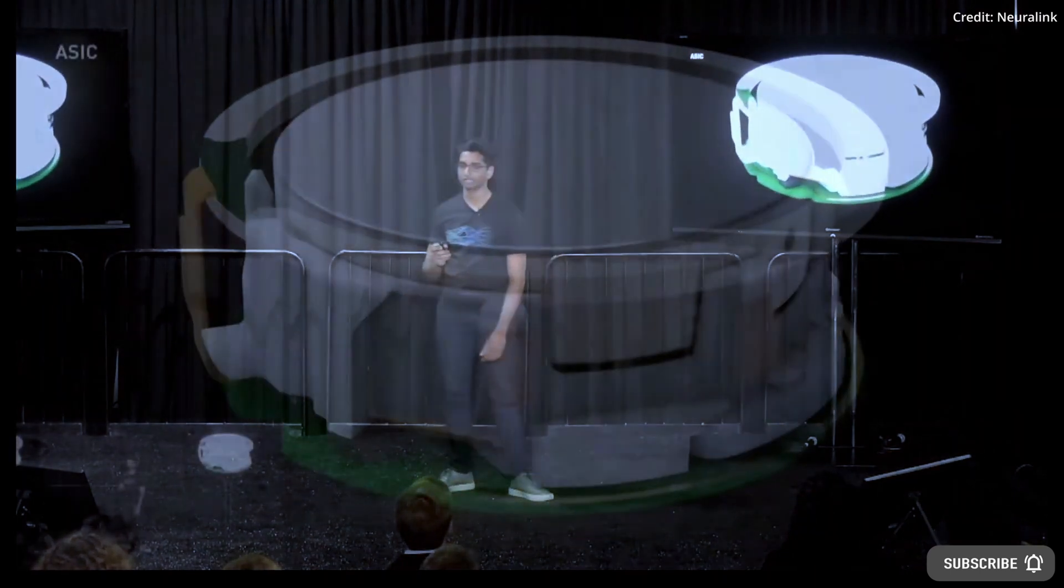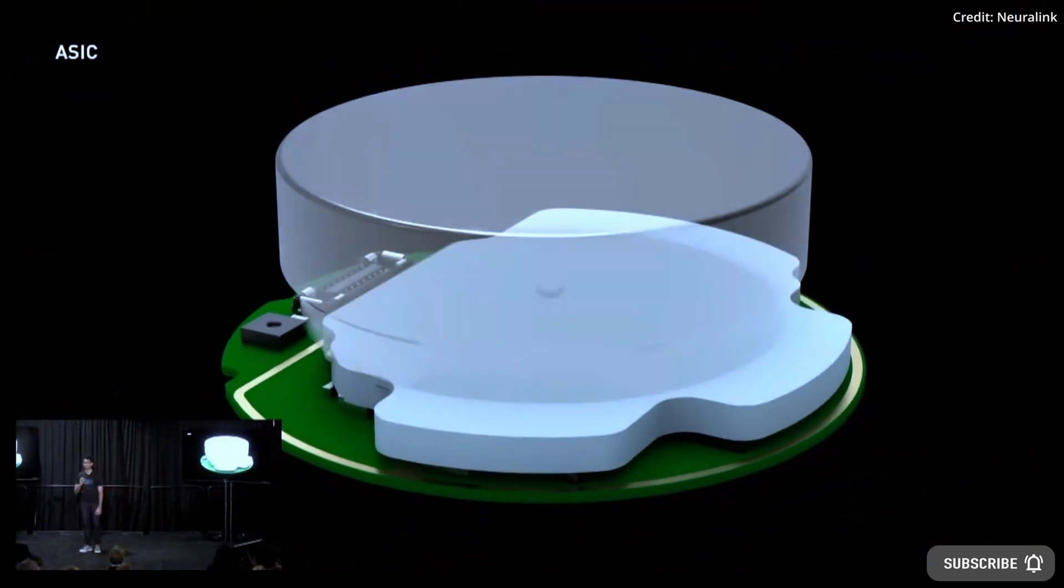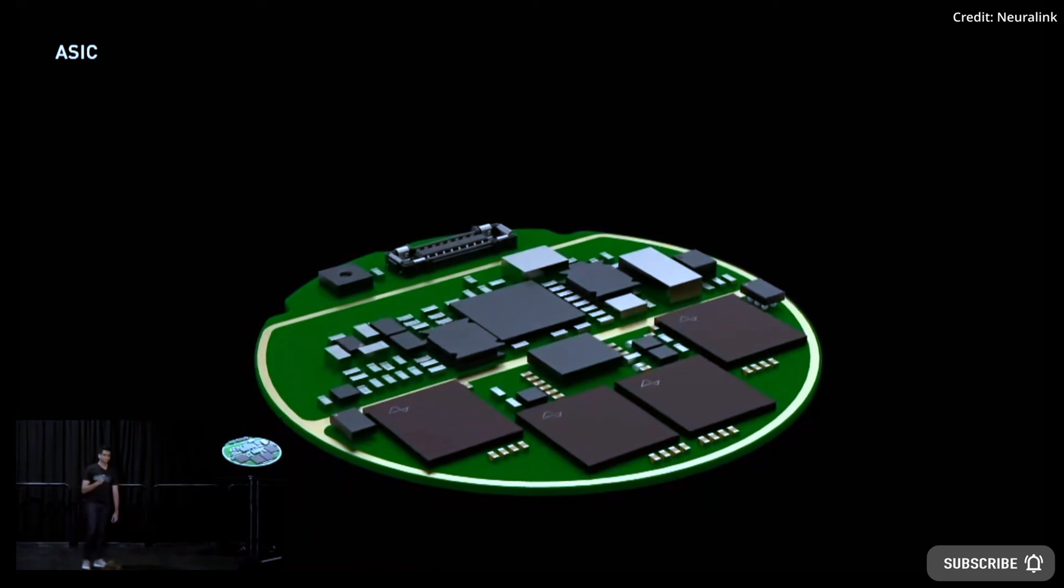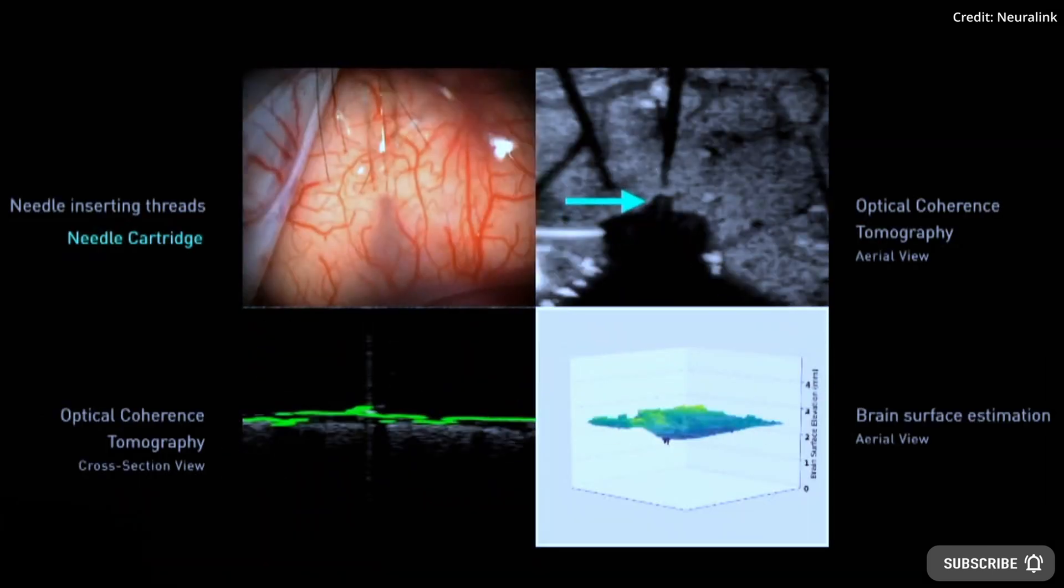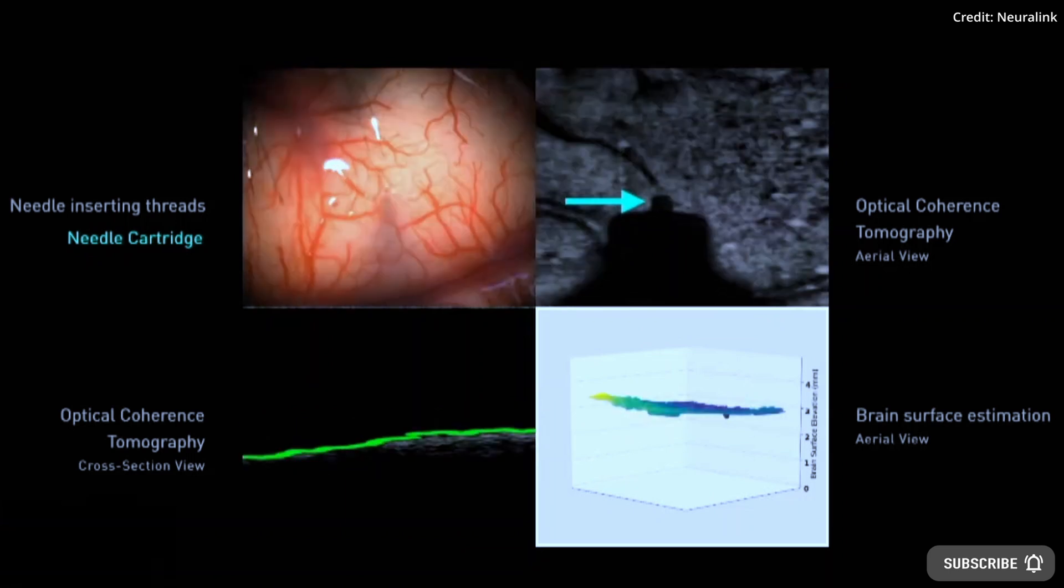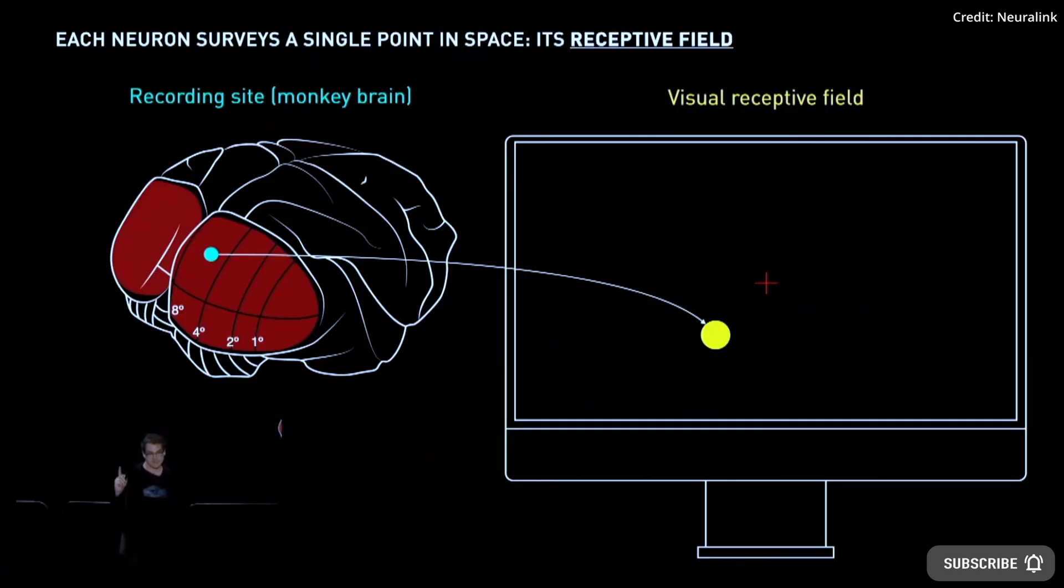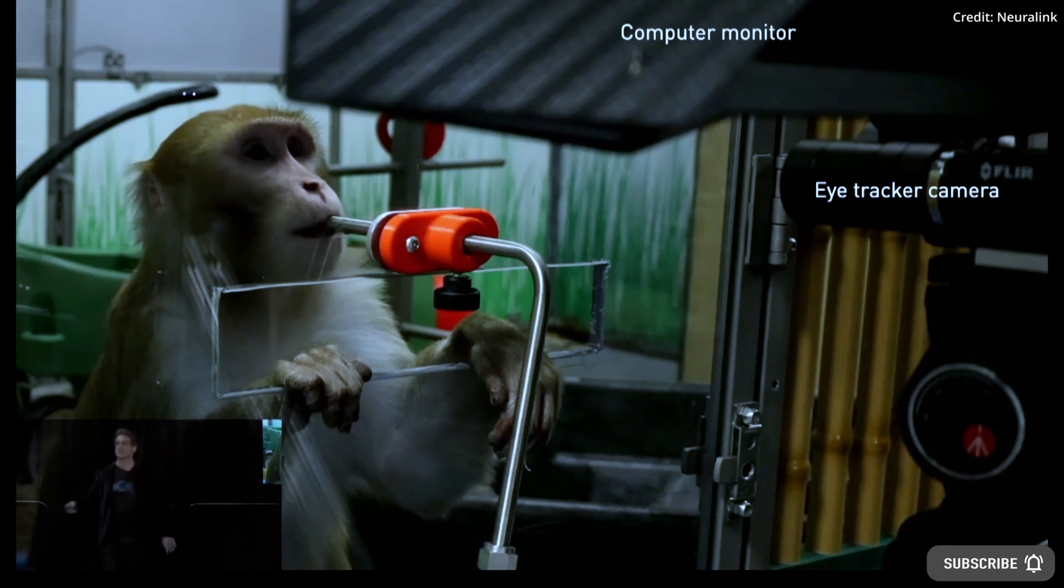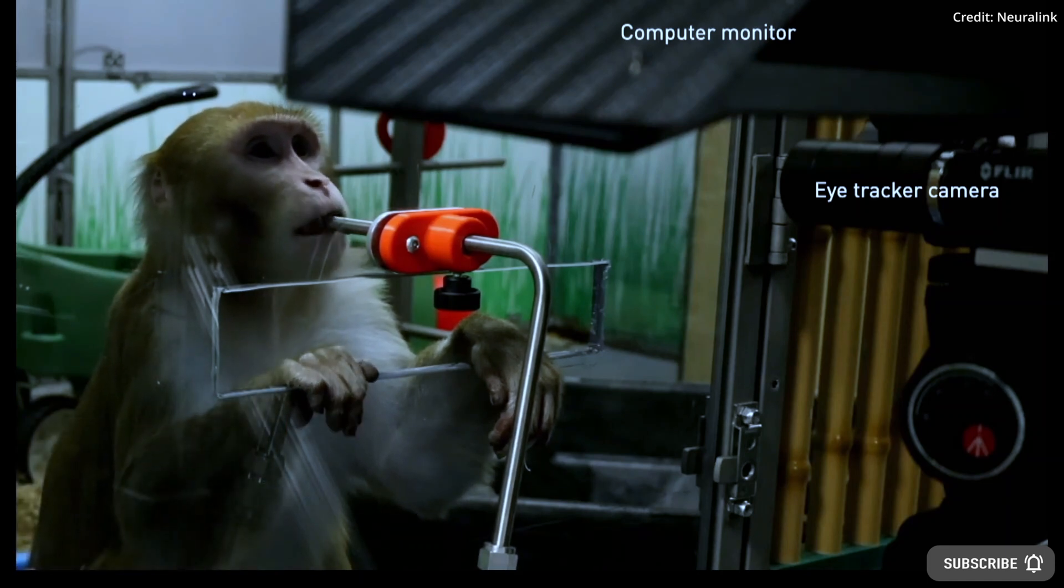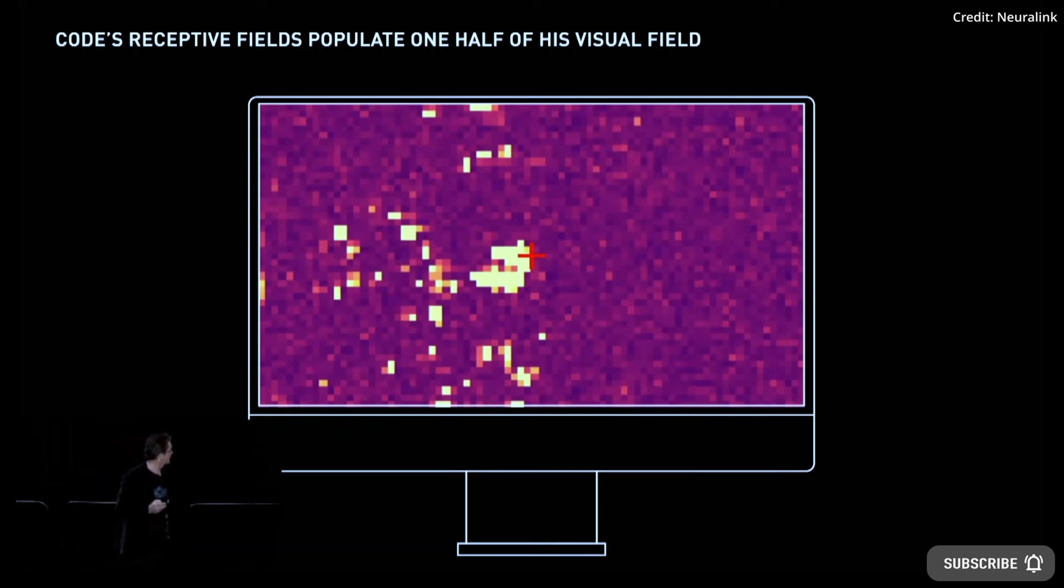Inserting a device into the brain always carries some risk of bleeding. Neuralink is trying to reduce that risk by using micron-scale threads inserted with a needle whose diameter is about the size of many neurons in the brain. Furthermore, because each thread is individually inserted, the neurosurgical robot is being designed so that it will aim each thread to avoid damaging blood vessels at or near the surface of the brain.